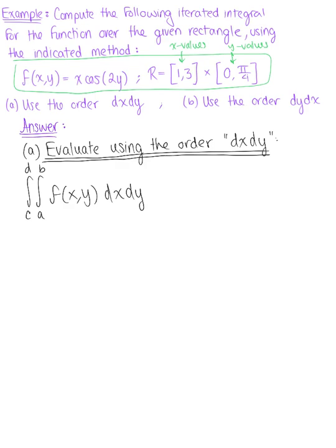When you're given a function over an indicated rectangle, these first values are always going to be your x values by the y values. So plugging in our given information here, we have the integral from 0 to π/4 on the outside. On the inside is 1 to 3 of x cosine(2y) dx dy.